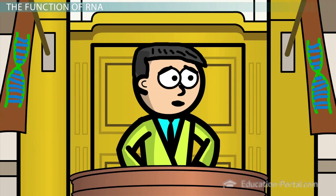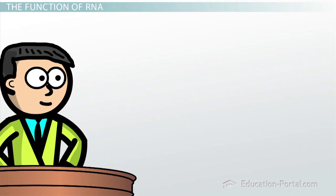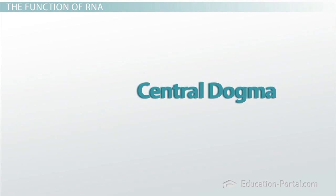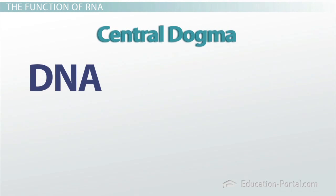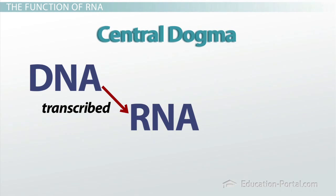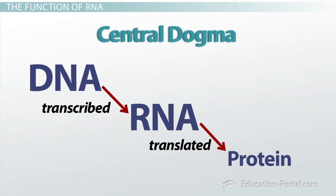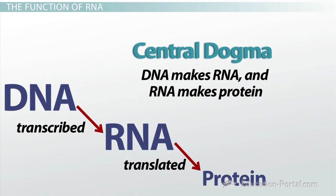But it is. I needed to explain the structure of RNA so you could better understand the function of RNA. DNA, RNA, and protein are functionally linked together in a concept known as the central dogma. Remember that DNA houses recipes to make different biological molecules. However, this information is not accessed directly from the DNA. Instead, a copy of the recipe is made in the form of RNA. This copy of the recipe can then be read to make a protein. The central dogma states that DNA makes RNA and RNA makes protein.